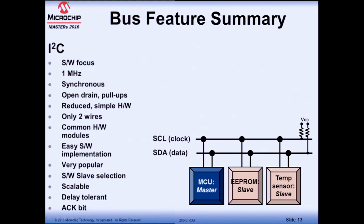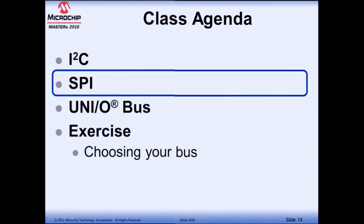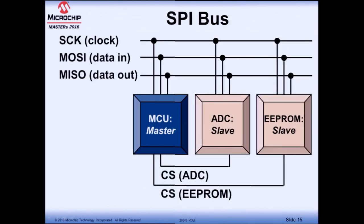Let's move on to the SPI bus. This is its block diagram, and immediately we can see it's considerably more complex — many more wires. It's a fairly complex hardware implementation, which means that in software it's going to be much easier to deploy and use. It still has a clock, so it's still synchronous, but now we have dedicated data-in and data-out lines dubbed MOSI and MISO — master output slave input, and master input slave output. It's still a master-slave architecture.